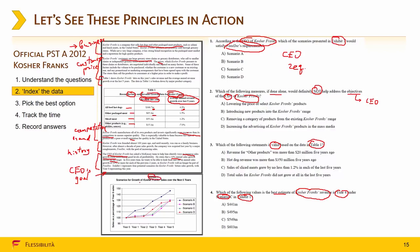Okay, exhibit 1. Scenarios for growth of Kosher Franks sales over the next 5 years. And the unit of measurement is percentage of year 0 sales. Okay, so year 0 sales is 100%. Then year 1 sales under Scenario A is 111%. Year 3 sales under Scenario D is 115%. So I guess this will be important for question 4.